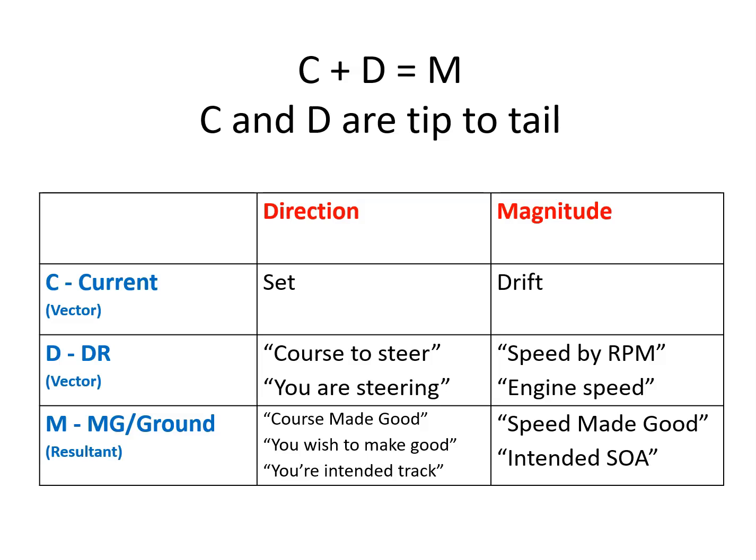What is the course to steer? They're asking you for a component of the DR line. You are steering - that's a component of the DR line. If they say your speed by RPM or engine speed, that's the speed for the DR line. If you see course made good, then they're talking about the course of the made good line. You wish to make good - that's going to be off the make good line. Your intended track, that's the made good line. Speed made good, speed of advance. So if you can start to tease out the distinctions between these words, then you can start to put them on the appropriate lines.